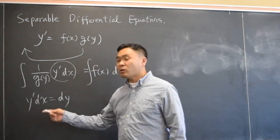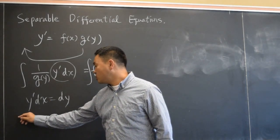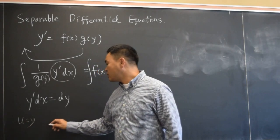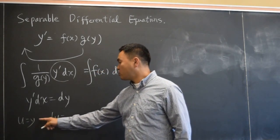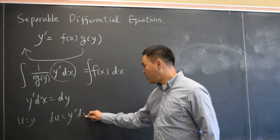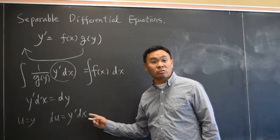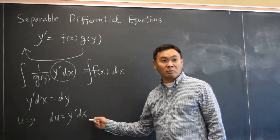So when you do u substitution, for example, if you do u substitution as u equals y, then what is du? You first have to differentiate y, and then you put dx, right? You put the derivative times dx. That's how you do u substitution. Hopefully you remember that.